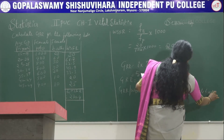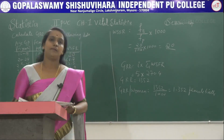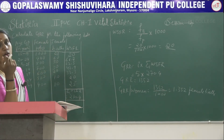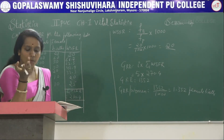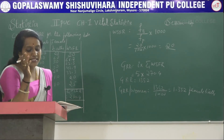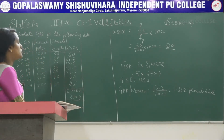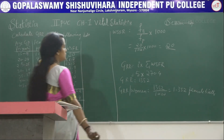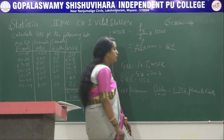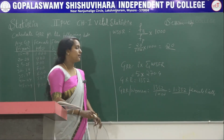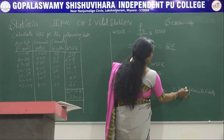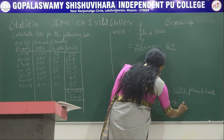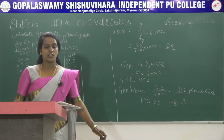So GRR per woman is approximately 1.352 female births, which rounds to about 1. Since this rate is greater than 1, the population is increasing. When GRR per woman is 1.352, which is greater than 1, we can conclude that the population is increasing.